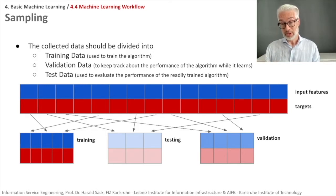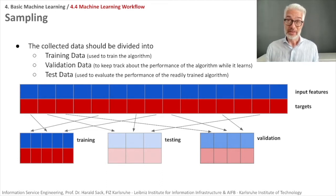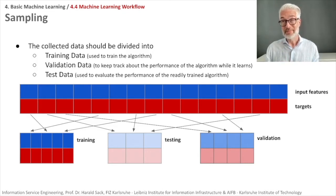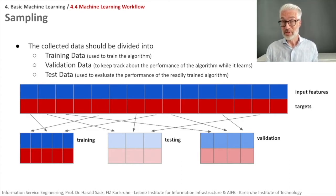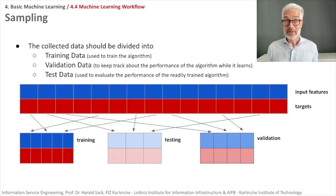Getting a sufficiently large data set is often a problem because filling in the target variable usually has to be done manually and is costly — you don't always have this data available. Creating this kind of labeled data is rather costly, although sometimes you can take it from the internet, but then you also have to watch out for all kinds of biases. In many cases, you really do not have much data available.